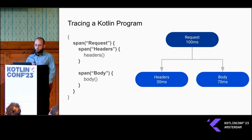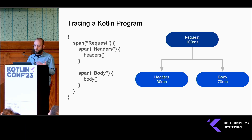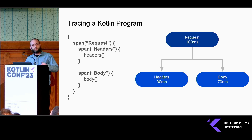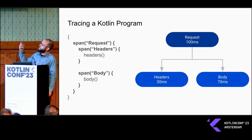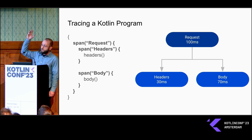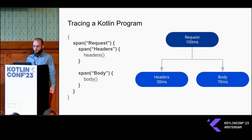Tracing a program is usually how we monitor and measure complex systems in production. Here we have a simple Kotlin program that's some sort of request handler divided up into processing headers from the request and processing the body of the request. To measure this system in production, we add things called spans. You give the span a name, and the tracing system will measure how long that span takes. They nest into a tree so that you get an idea of the overall execution time. In this case, we've got 100 milliseconds to process our request.